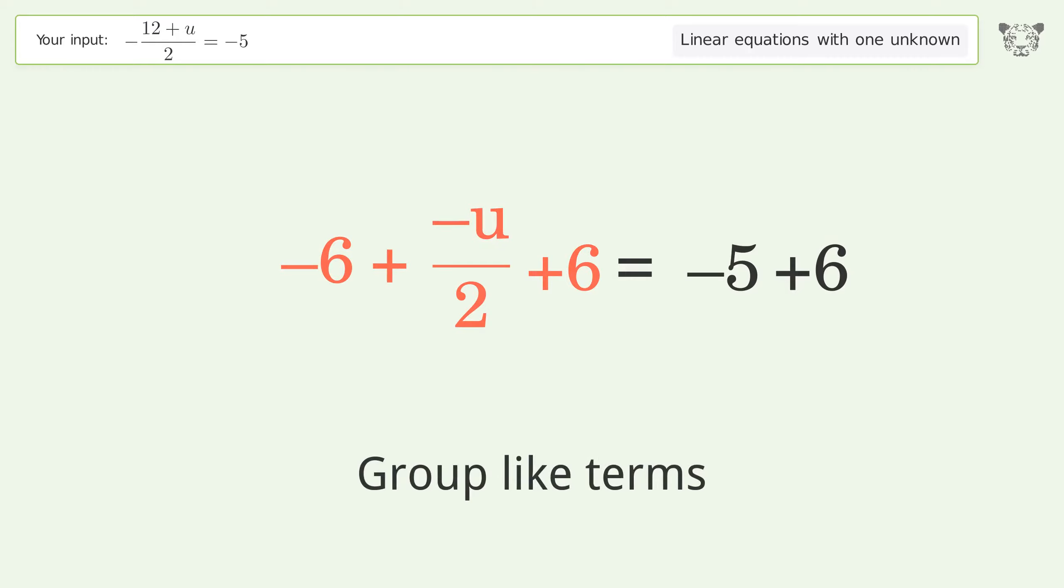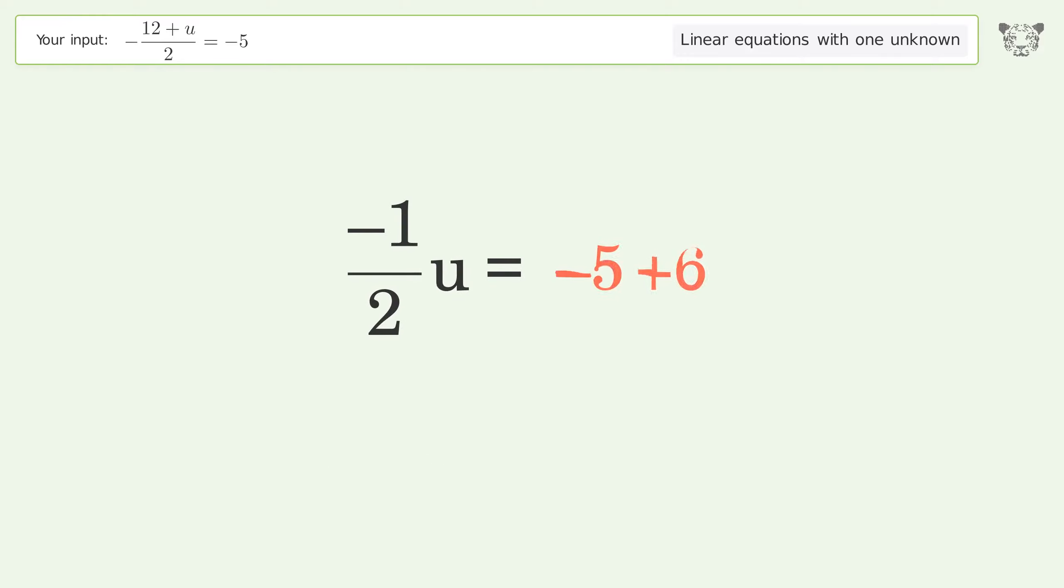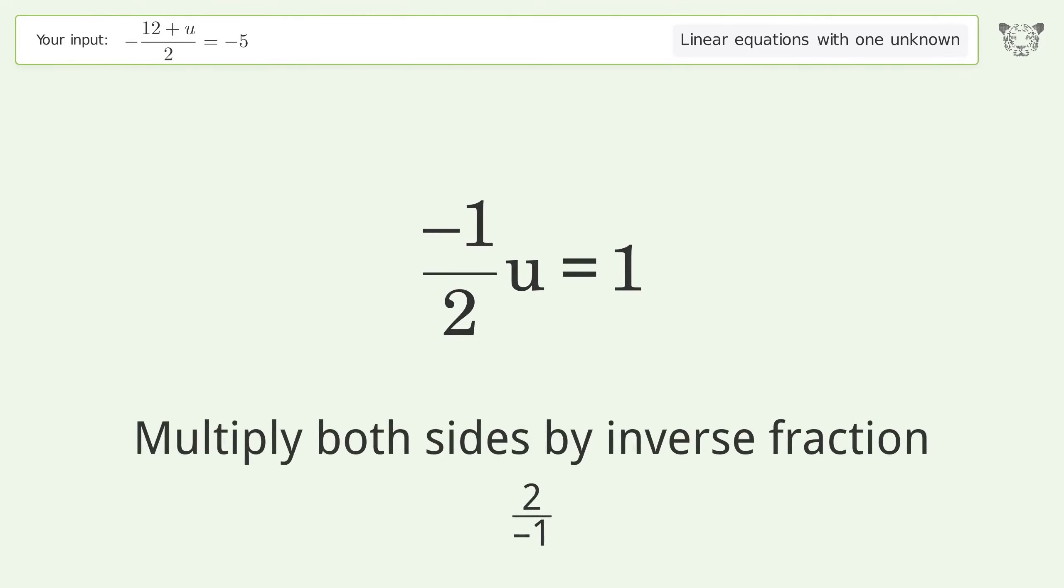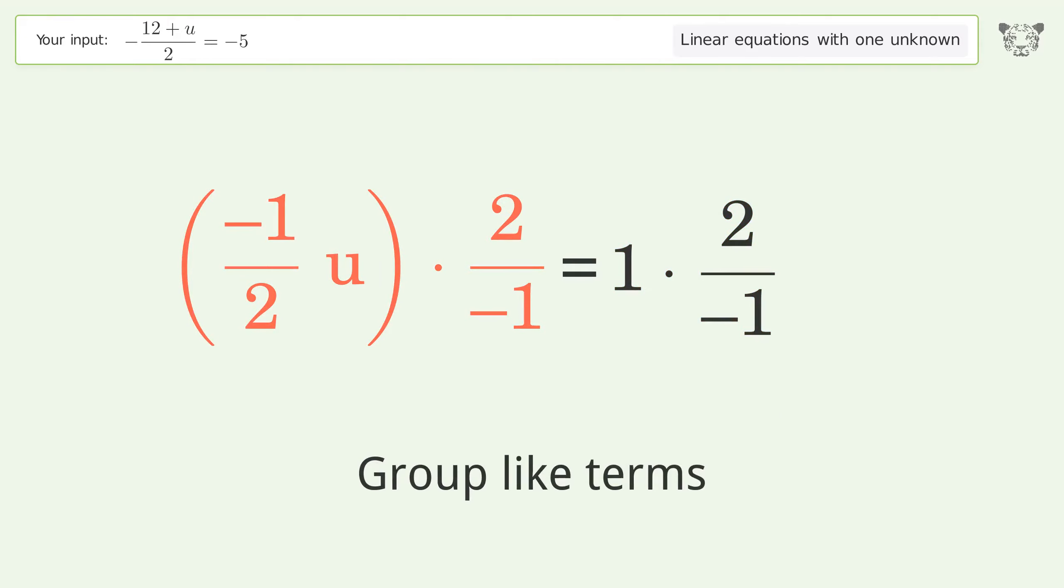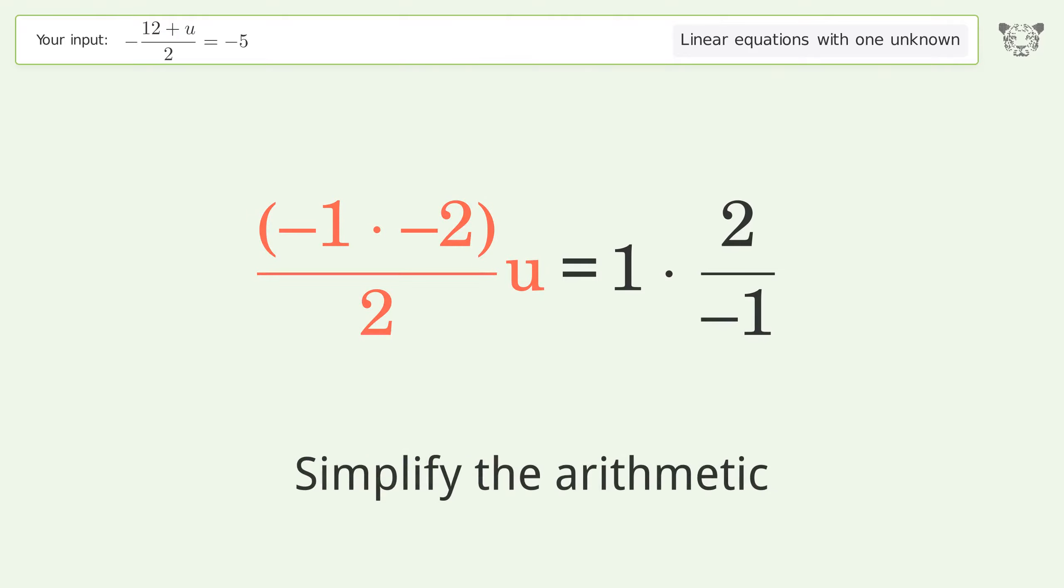Group like terms. Simplify the arithmetic. Isolate the u. Multiply both sides by the inverse fraction 2 over negative 1. Group like terms. Multiply the coefficients. Simplify the arithmetic.